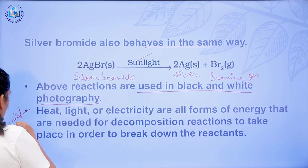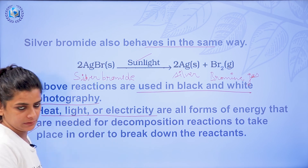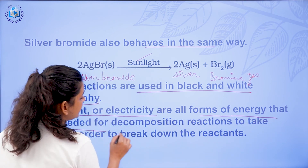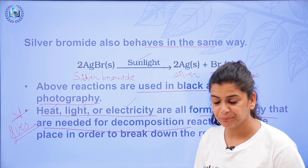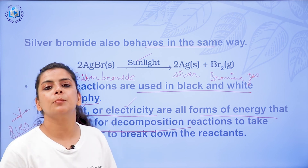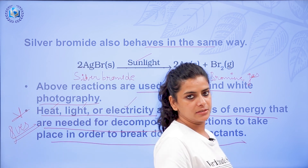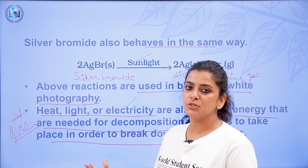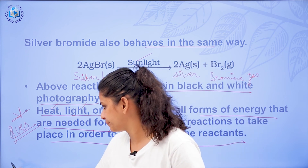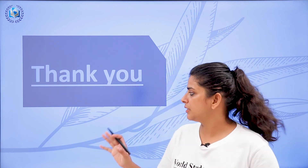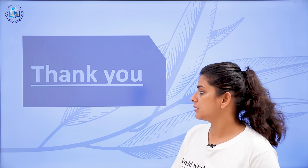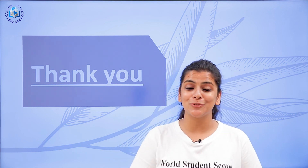Questions will come on this — AgCl and AgBr reactions are very important. Heat, light, and electricity are all forms of energy required for decomposition reactions to take place. Heat is used (as we saw), light is used (as we saw), and electricity is used (as we saw). These are all required in decomposition reactions to break down the reactants. This concludes today's lecture on decomposition reactions. I hope you understood it. Keep studying, keep learning, and I'll see you in the next lecture. Thank you.